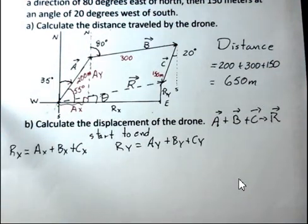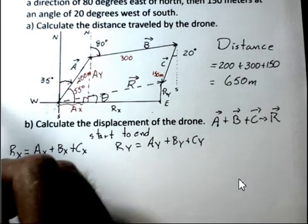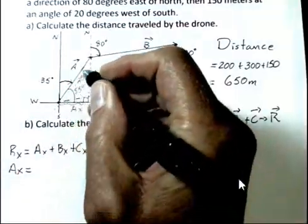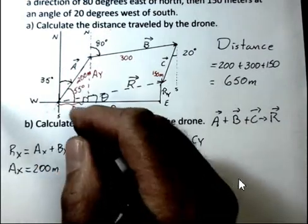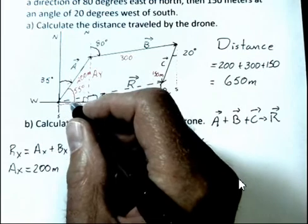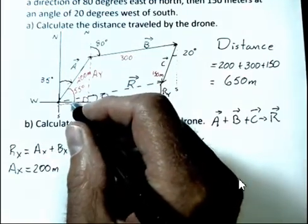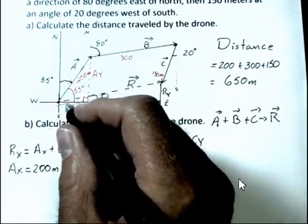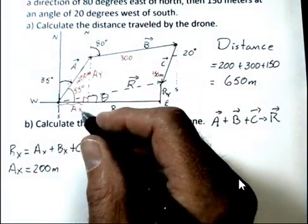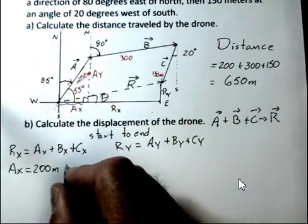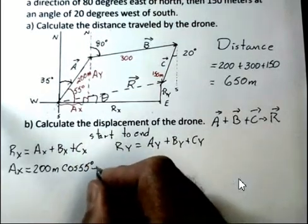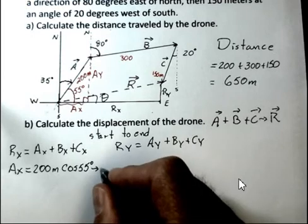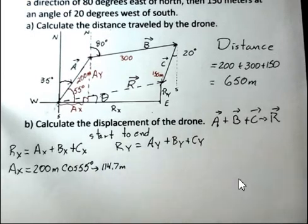And we're going to take advantage of that angle and calculate A sub x and A sub y now. So for A sub x, I need the length of the hypotenuse. Well, that's 200 meters. And to come up with the x component, I need to use the cosine function. The cosine function multiplied by the hypotenuse gives us the adjacent side to the angle. And that's what A sub x is. It's adjacent to the angle. So I need to use cosine of 55 degrees. And at some point here, you should stop the video and use your calculator and verify this is 114.7 meters because I might make a mistake.